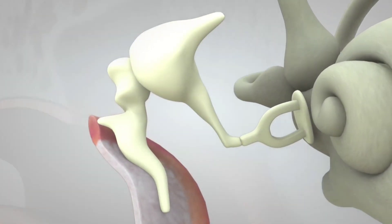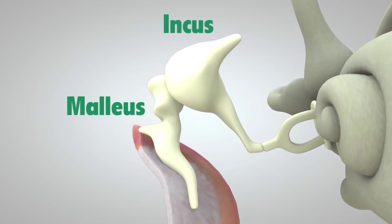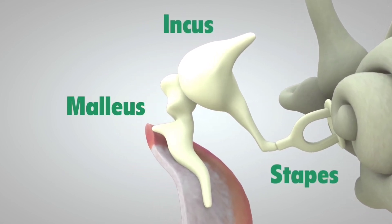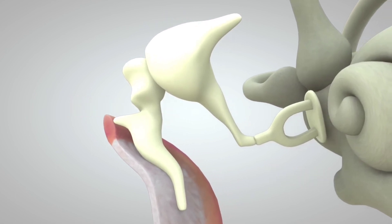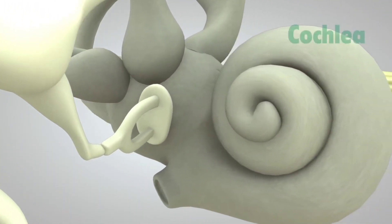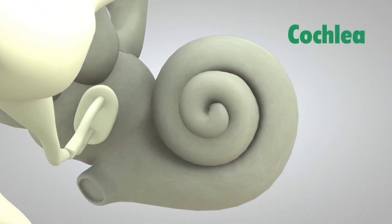The three tiny bones—malleus, incus, and stapes—amplify or increase the sound wave vibrations and send them to the cochlea.